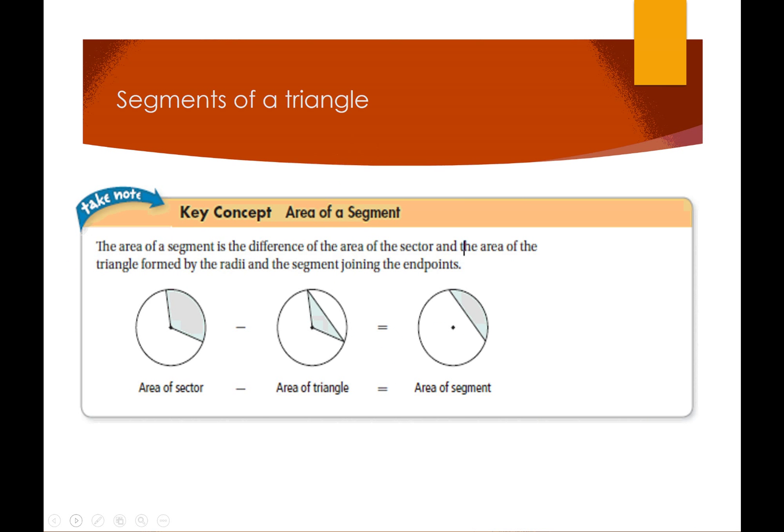Now a segment is a little bit harder. It's the difference between the area of a sector and the area of the triangle formed by the radii. So basically this is my segment, this little shaded area here. And in order to find that area, I've got to find the area of the sector and I've got to subtract out the area of the triangle, and that's going to equal the area of the segment.